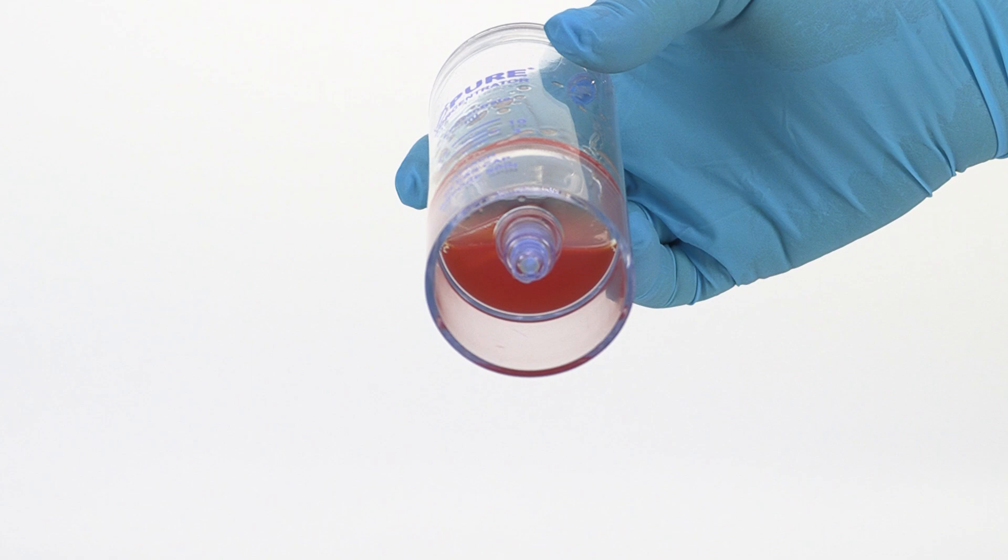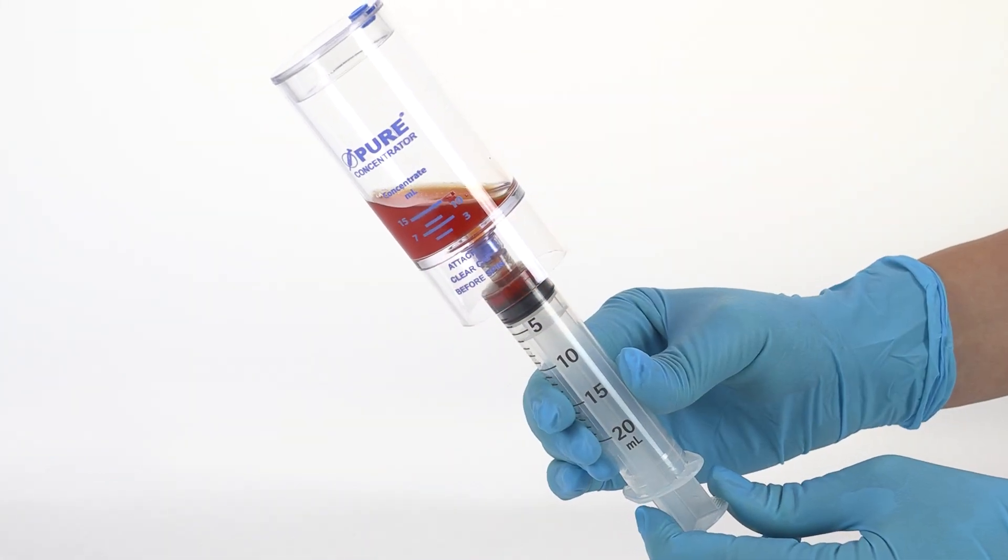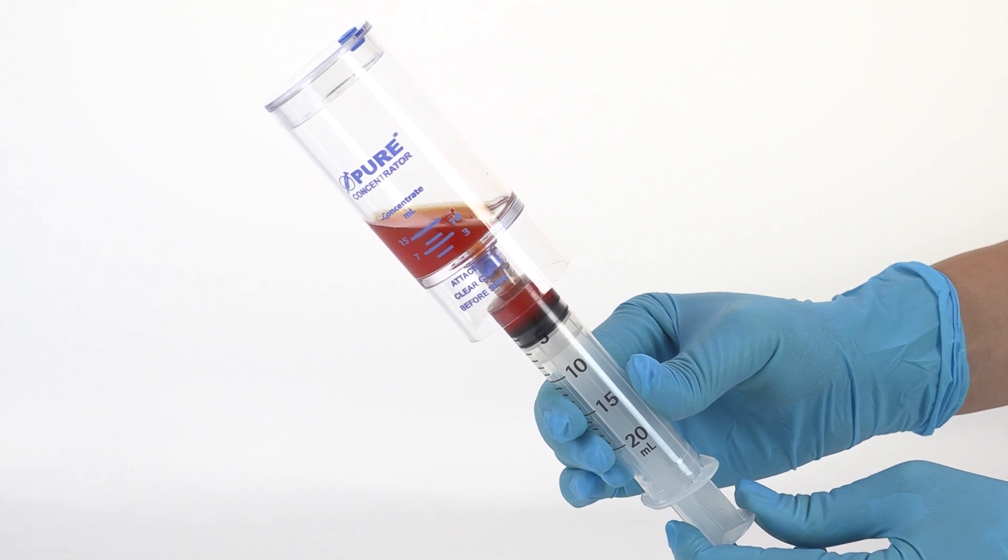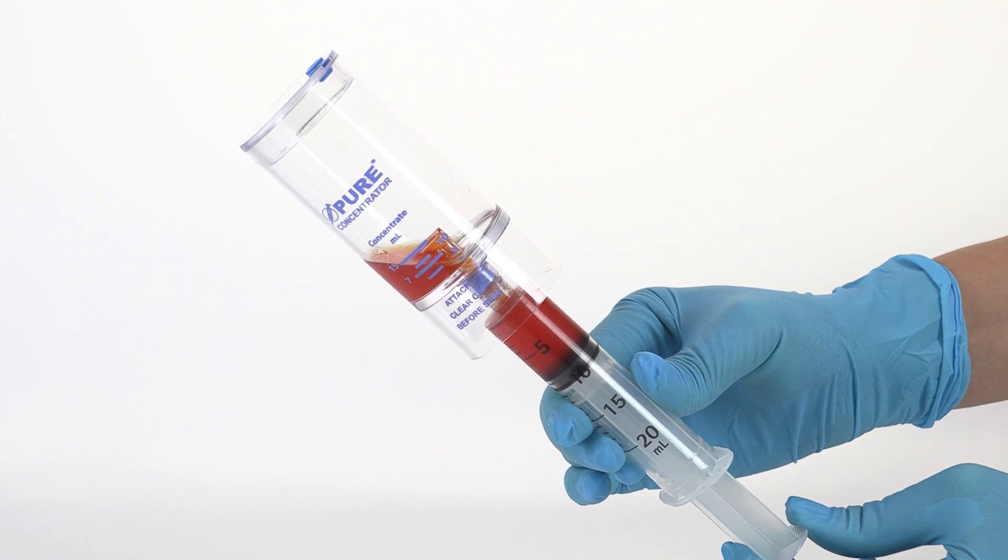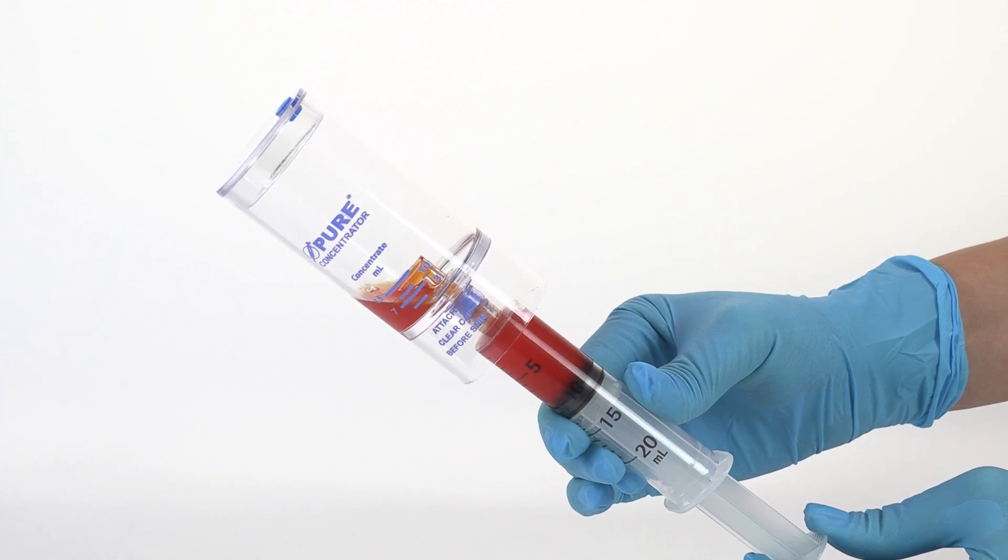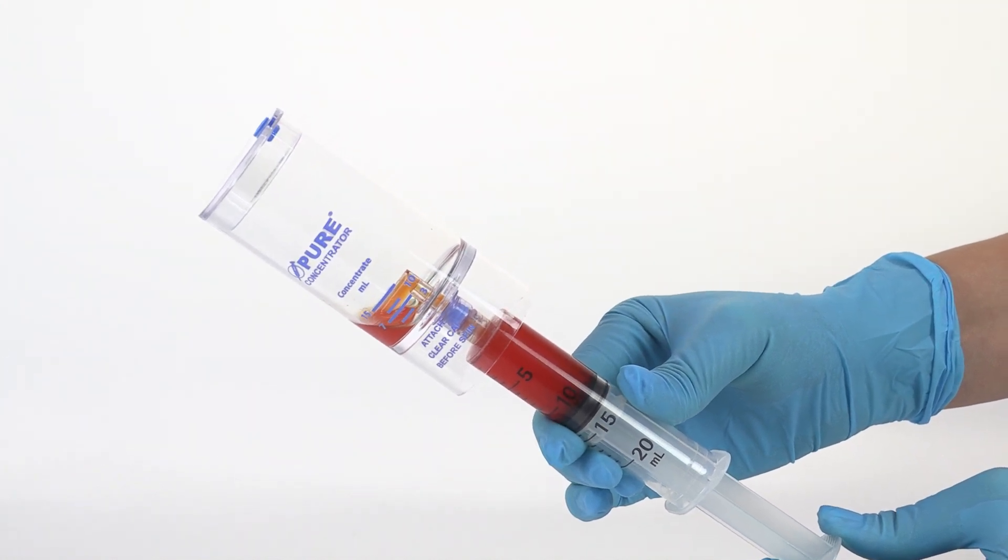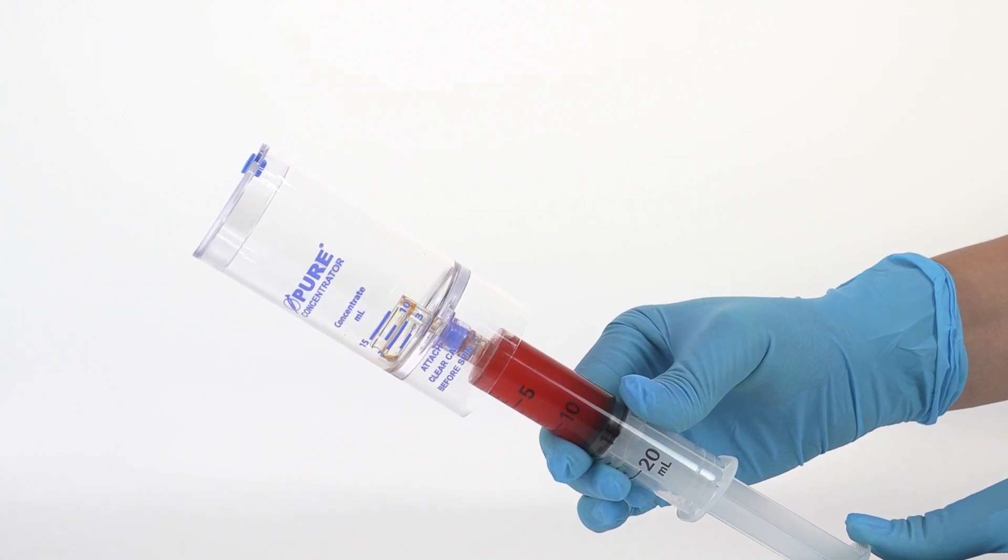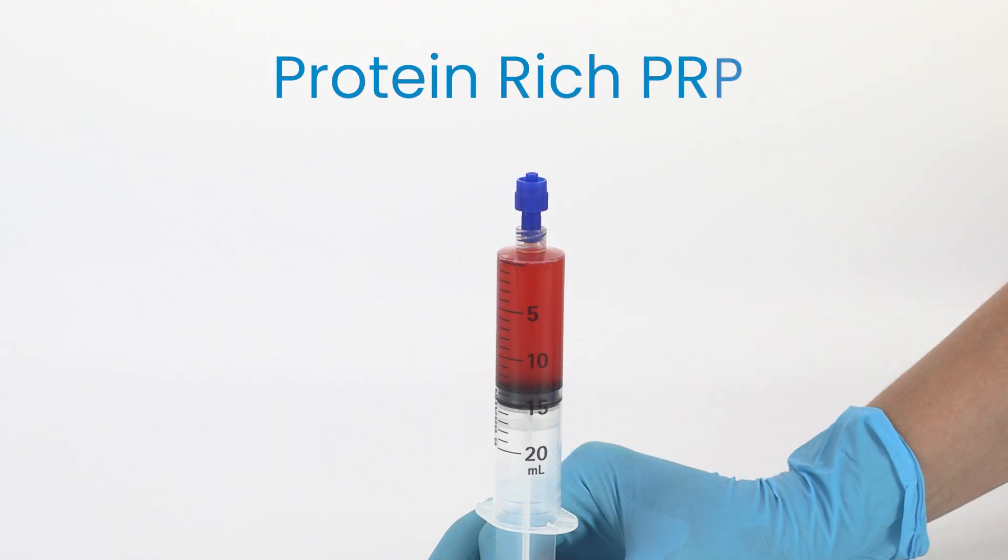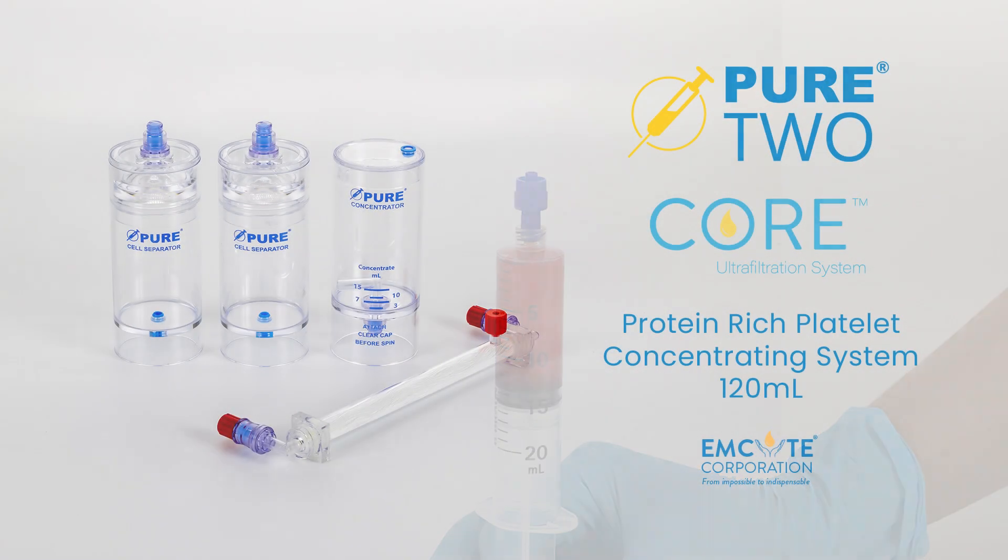This creates protein-rich PRP. Attach the 20-milliliter syringe to the needleless port and tilt the device to aspirate the protein-rich PRP. This concludes our processing video for Emcyte's Pure2 protein-rich platelet concentrating system.